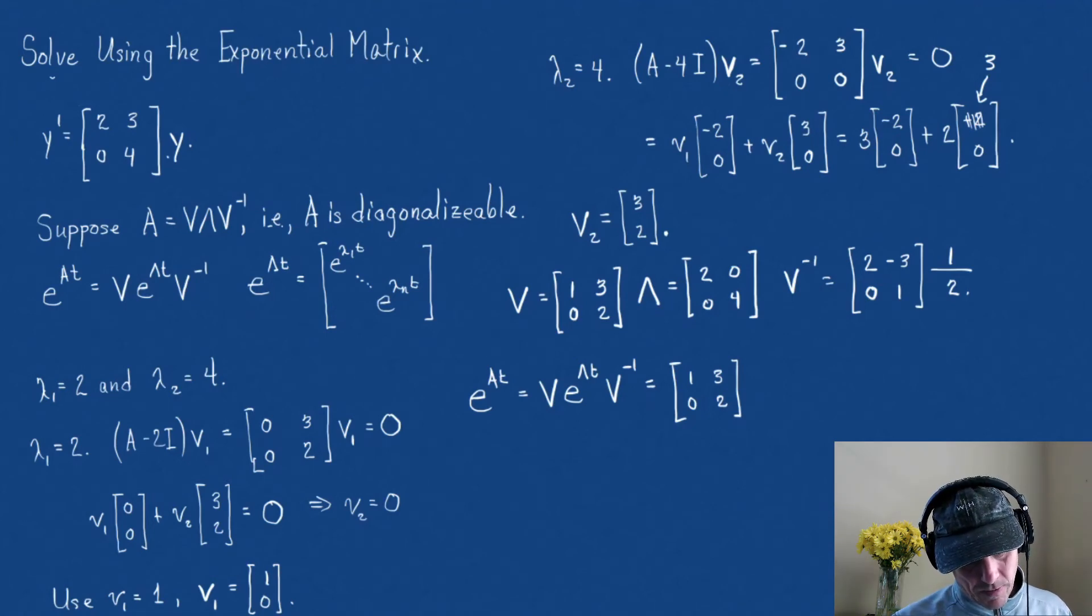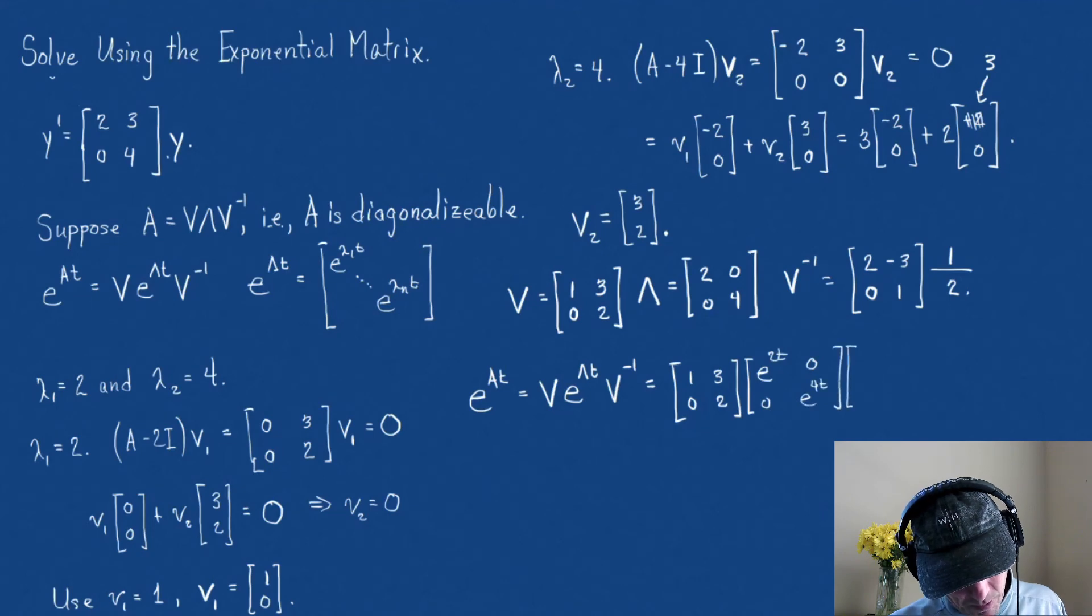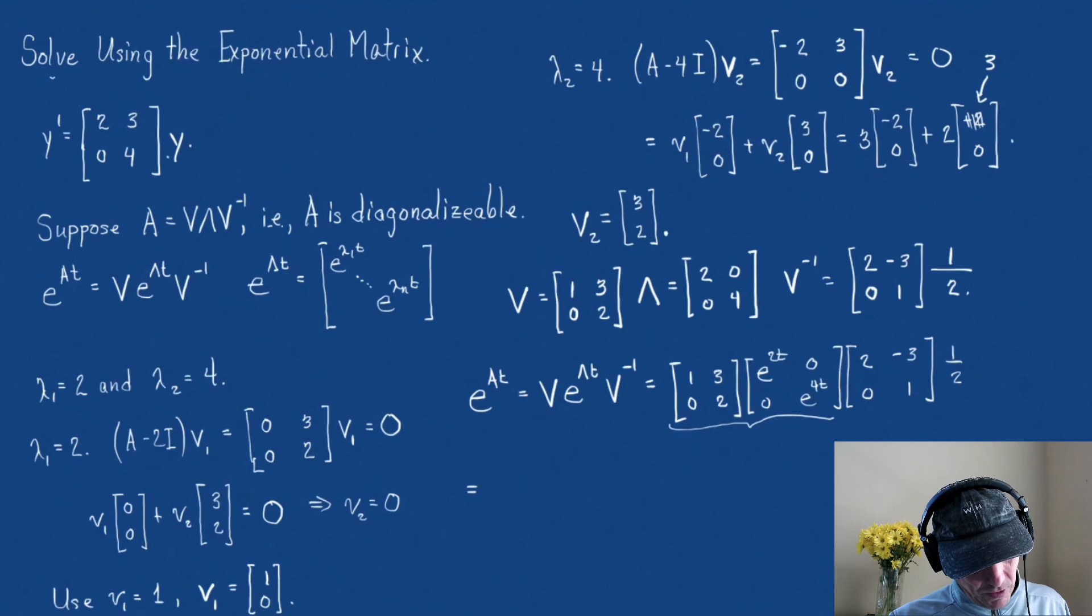Then, now my eigenvalue, now E to the lambda T, really, this is E to the 2T, 0, 0, E to the 4T, times the inverse matrix, 2, 0, minus 3, 1, times 1 half. Well, let's finish this up. Here we go. I'm going to use the associative property. Let's multiply these first two matrices.